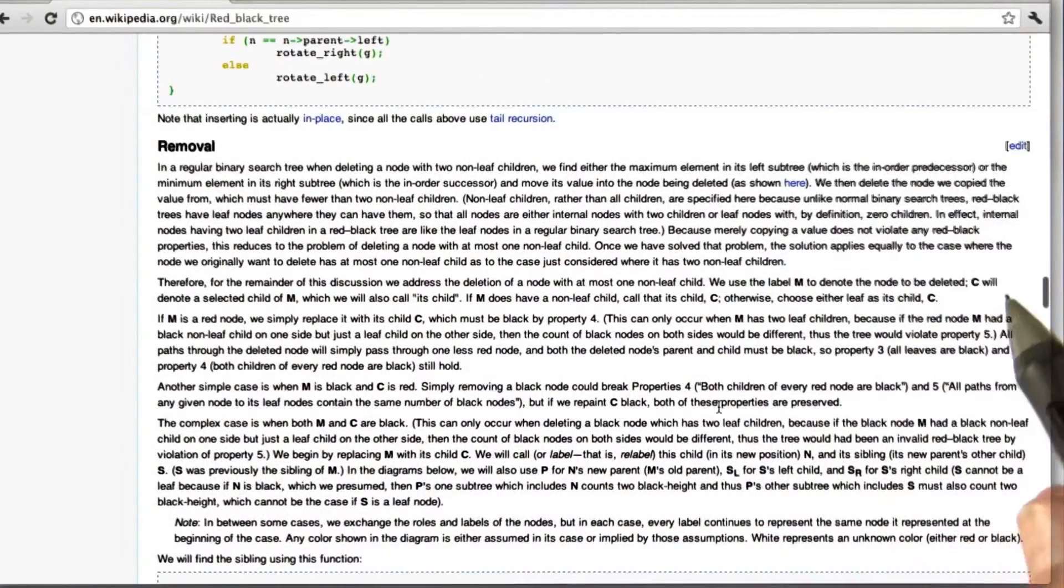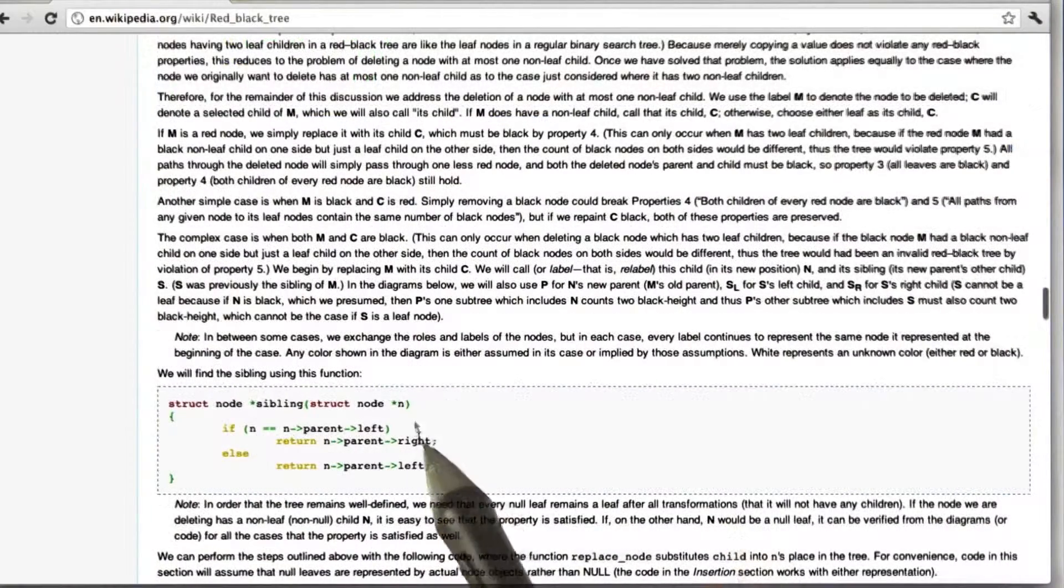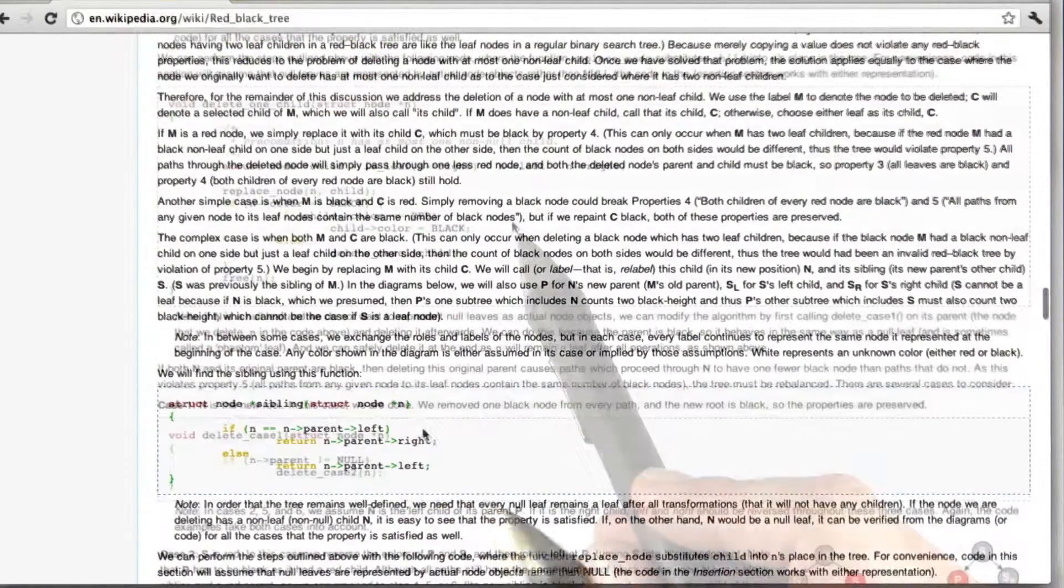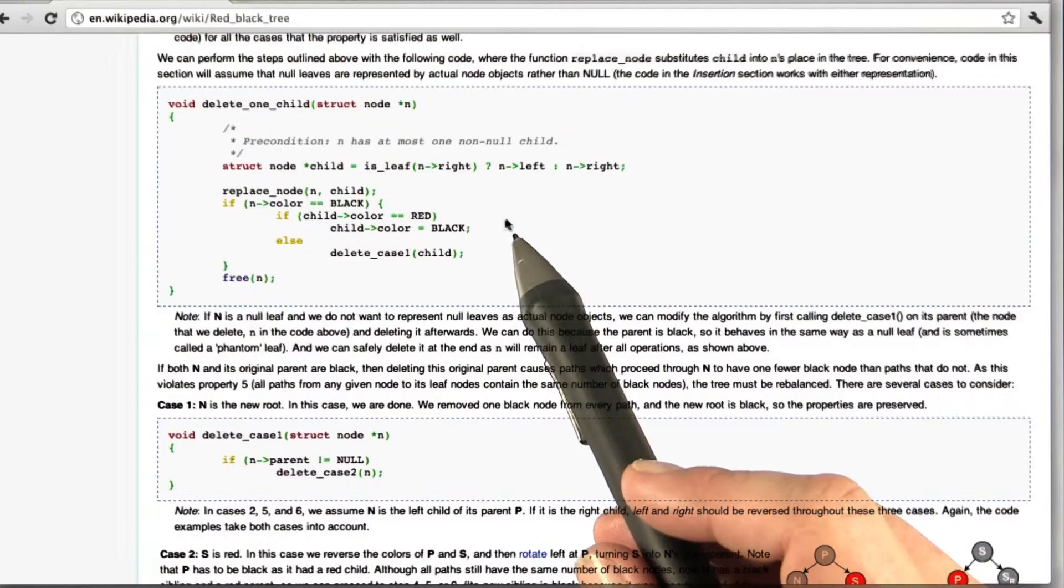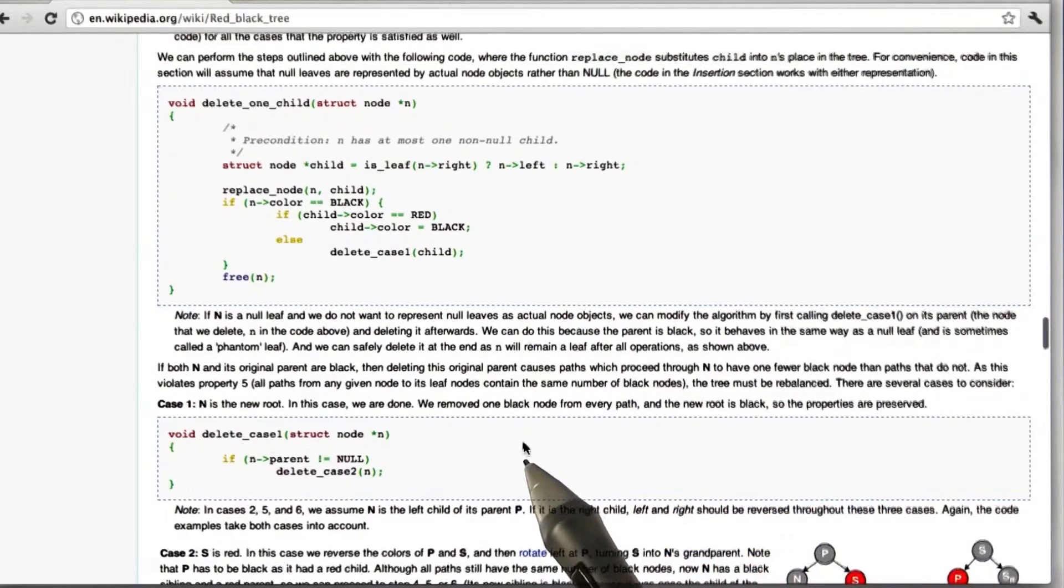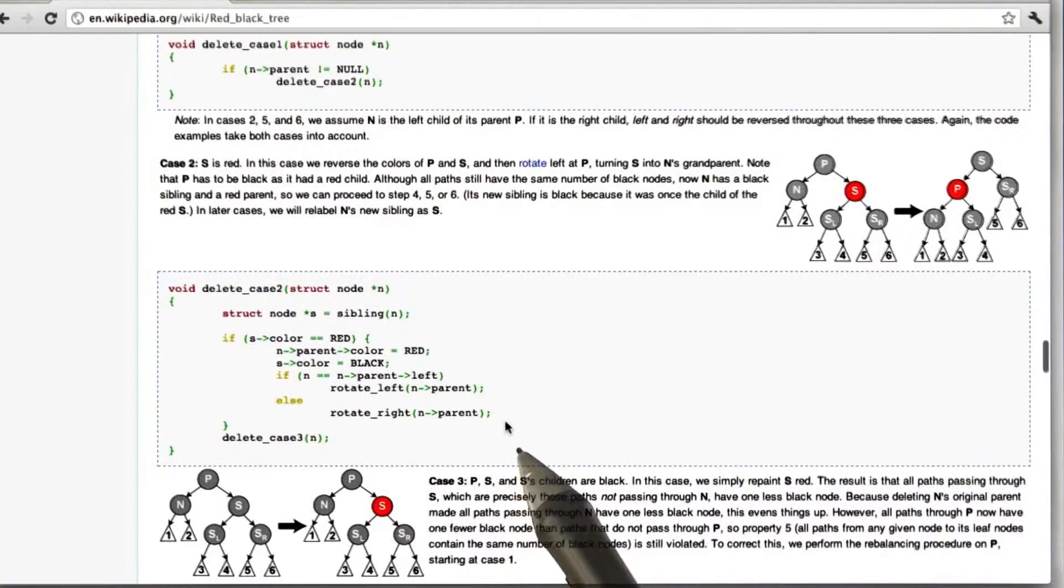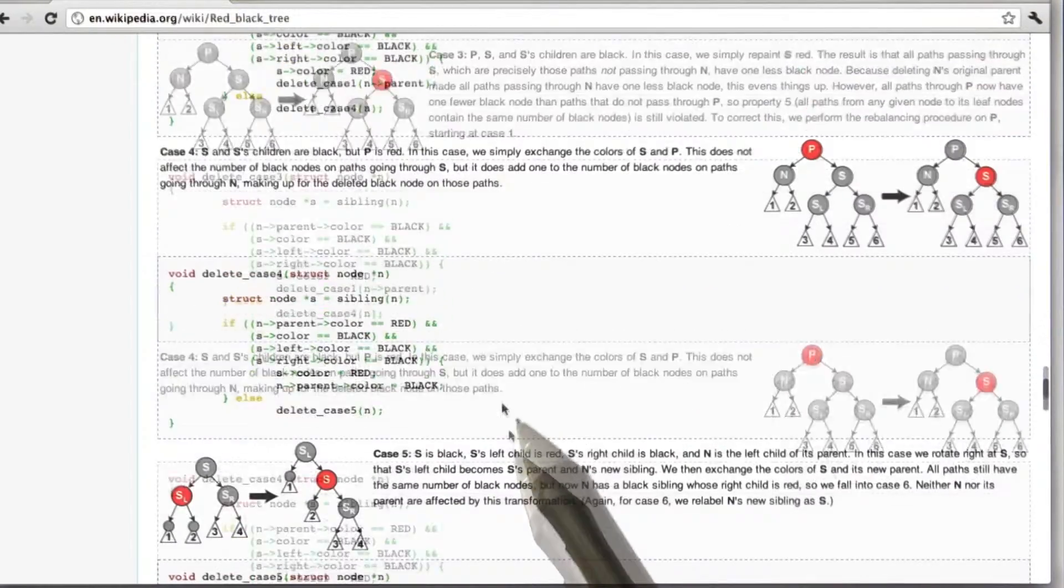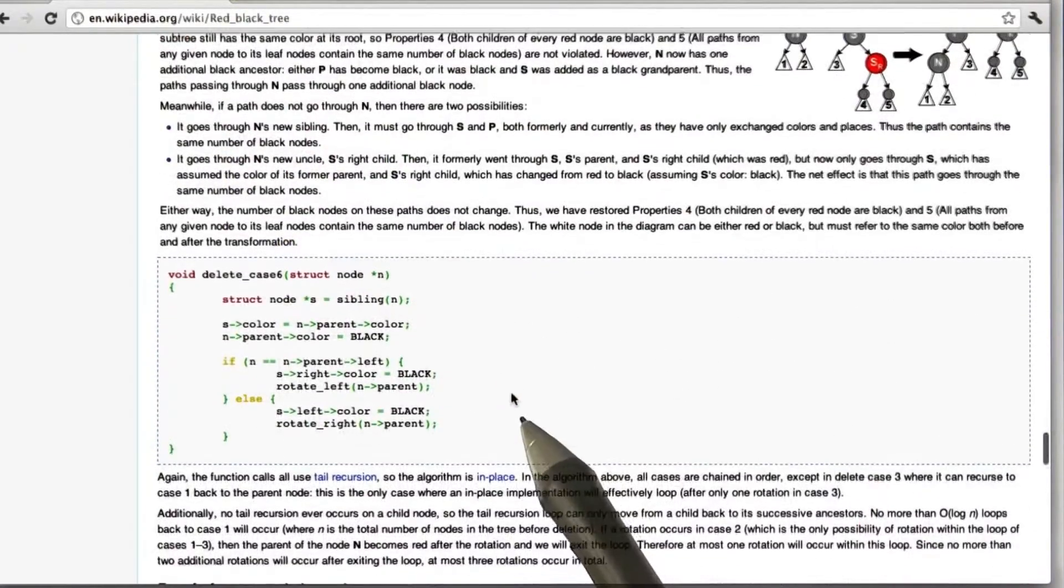Removal is even more complicated. This is the formal description. We need a helper function called the sibling. Here's a helper function to delete one child, which is easy. And now come all the special cases. Case one, case two, case three, case four, case five, case six.